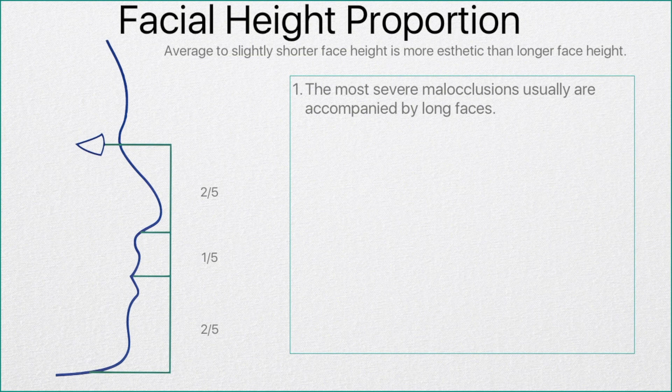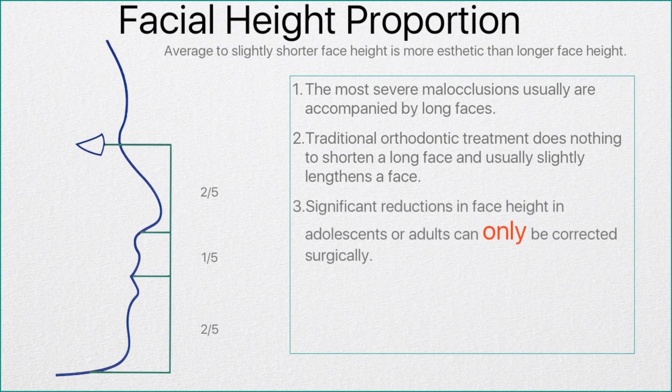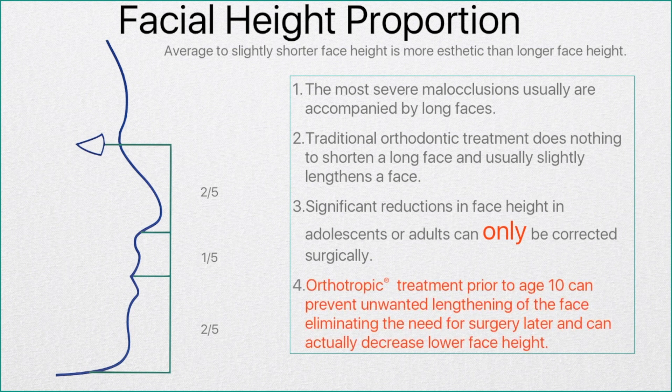The most severe malocclusions are usually accompanied by long faces, and unfortunately traditional orthodontic treatment does nothing to shorten a long face and usually slightly increases the length of the face. We've been taught that significant reduction in face height in adolescents or adults can only be corrected surgically. In reality, orthotropic treatment prior to age 10 can prevent unwanted lengthening of the face and eliminate the need for surgery later. We can also decrease the lower face height, as we're going to show you in a moment.